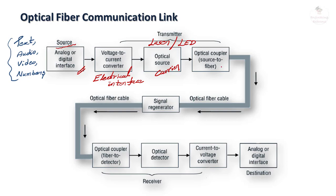The optical coupler is used between the optical source and the channel, and another coupler is used from the channel to the optical detector. The function of this coupler is to collect the light signal from the optical source and send it efficiently to the optical fiber, and also to connect the received signal to the photodetector.